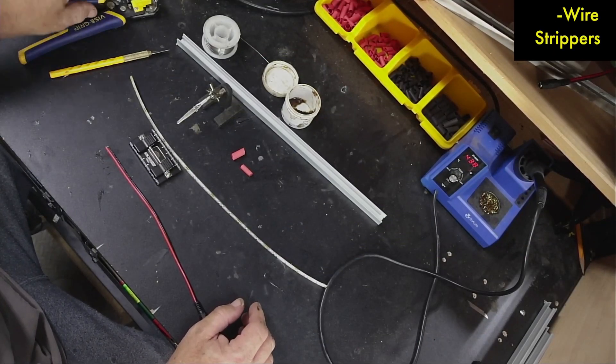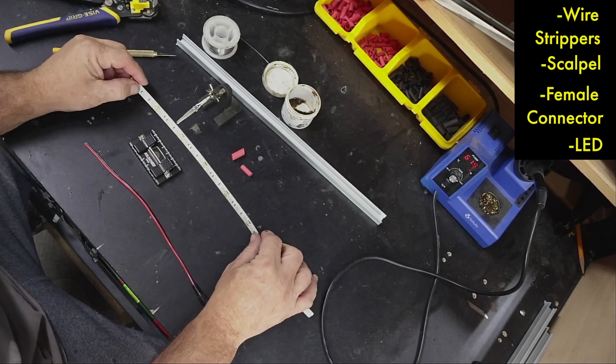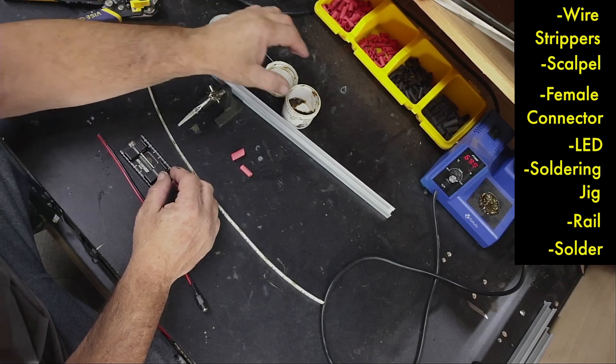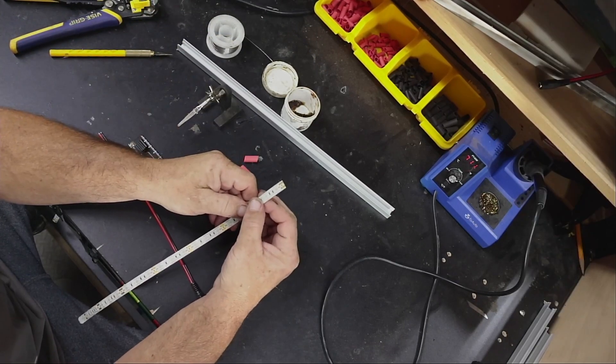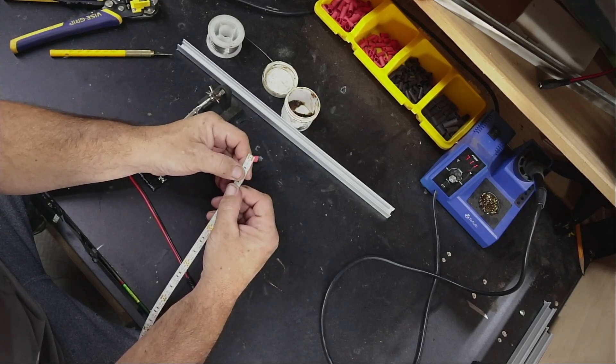Okay guys, so here we are. We have our wire strippers, scalpel, female connector, LED, soldering jig, rail solder, solder paste, and waterproof connectors. These are waterproof LEDs with a silicone coating on the outside, and you've got to get that off to reveal the connections.